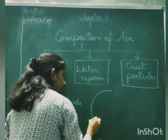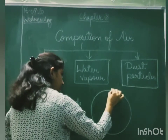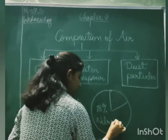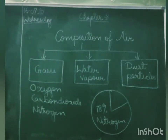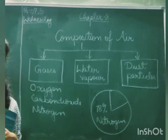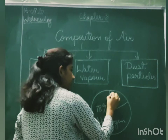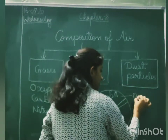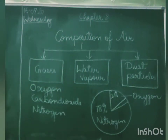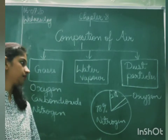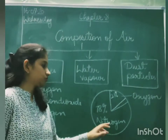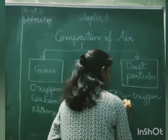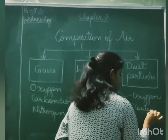Now, particularly about gases — if I talk about only gases, then 78% of the gases is nitrogen, 21% is oxygen, and only 1% is carbon dioxide. So 78% of the air is composed of nitrogen, 21% of air is composed of oxygen, and only 1% is carbon dioxide.